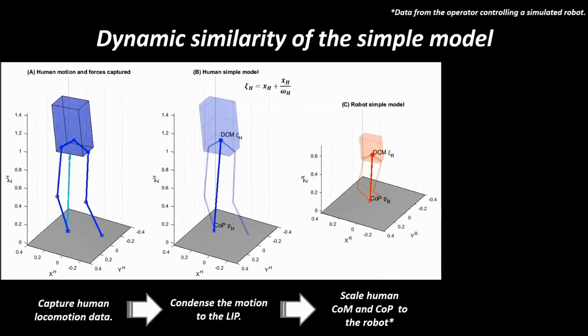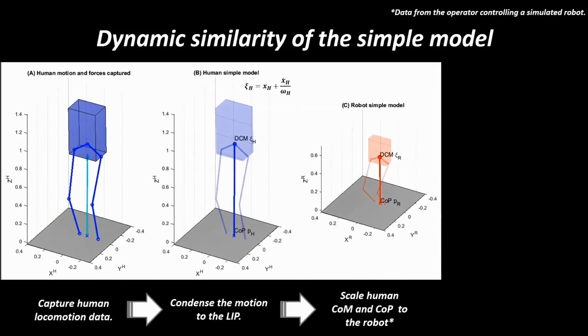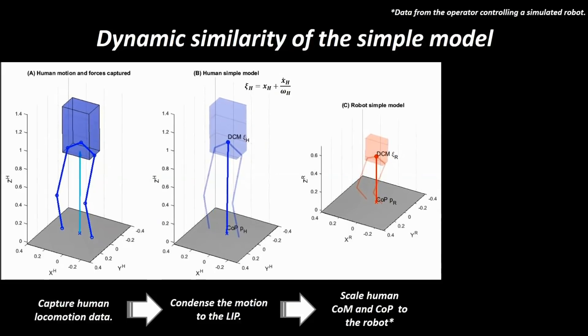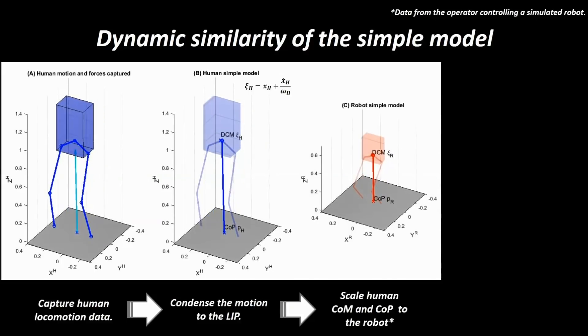Next we scale the motion of the pendulum model to robot proportions. In this work the machine is about one-third of human size and substantially lighter.